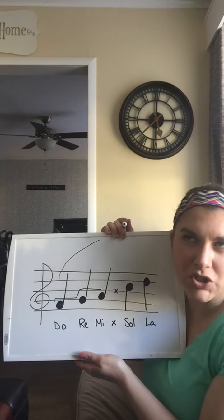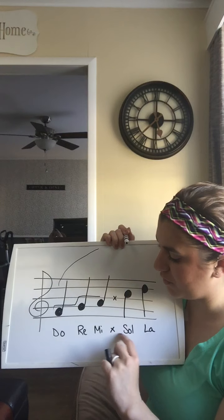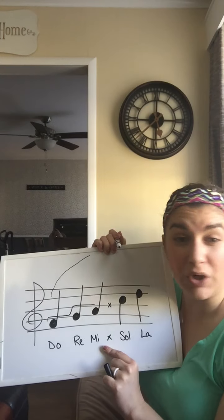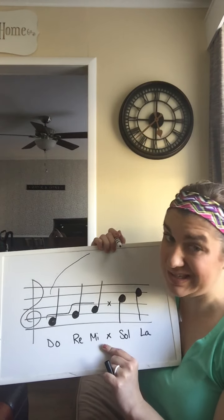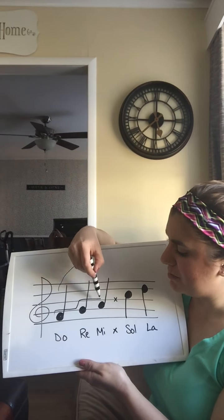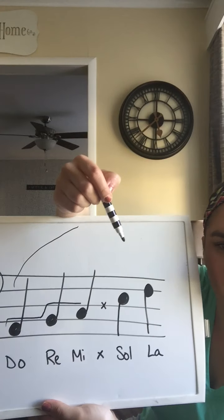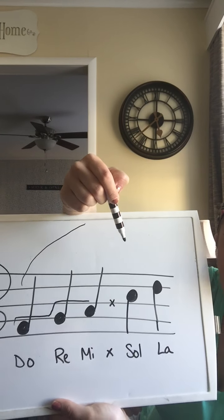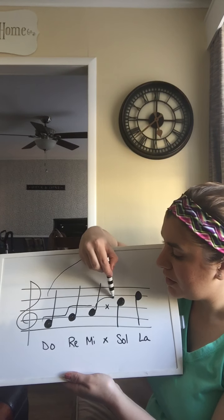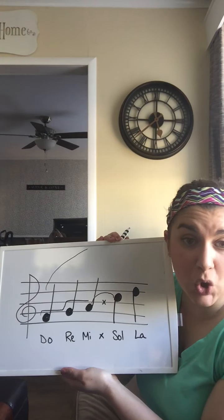Do you remember I said I was skipping over one of our solfege pitches? On your worksheet at home, you'll see that I've skipped over Fa. We don't learn to read Fa — we sing it, but we don't learn to read it yet. Fa would be right here, and because Mi is on a space, Fa would be on a line where that X is. But I'm skipping over that. So if I skip, I'm going to the next space up, and that's Sol.